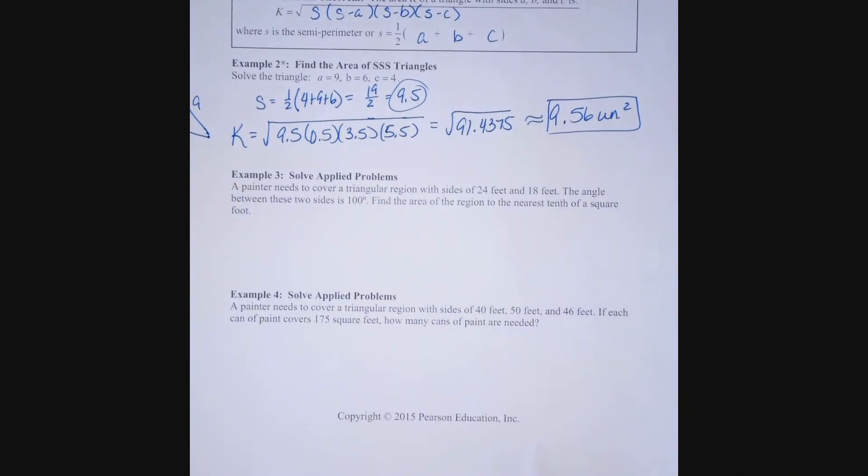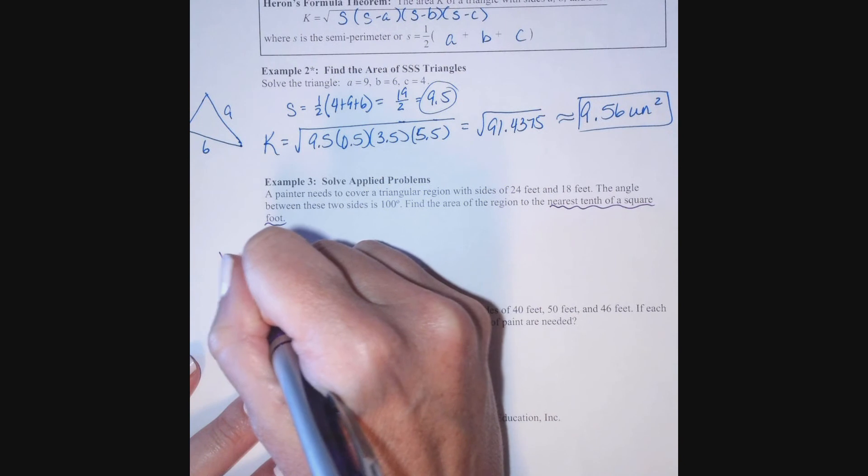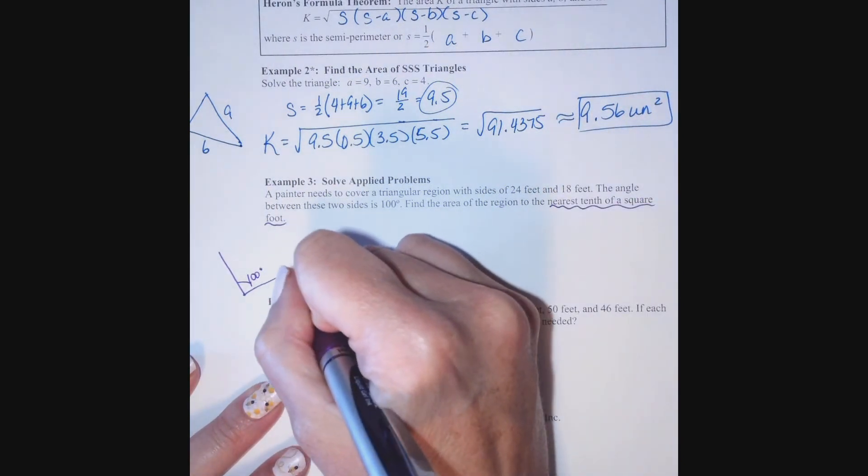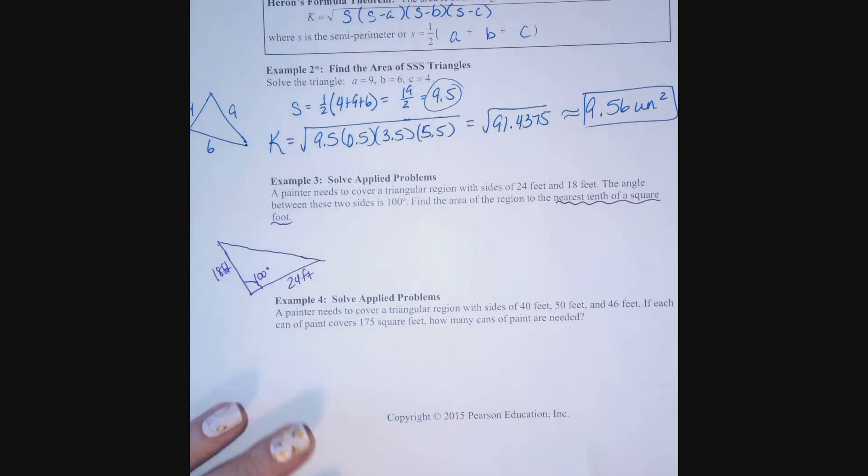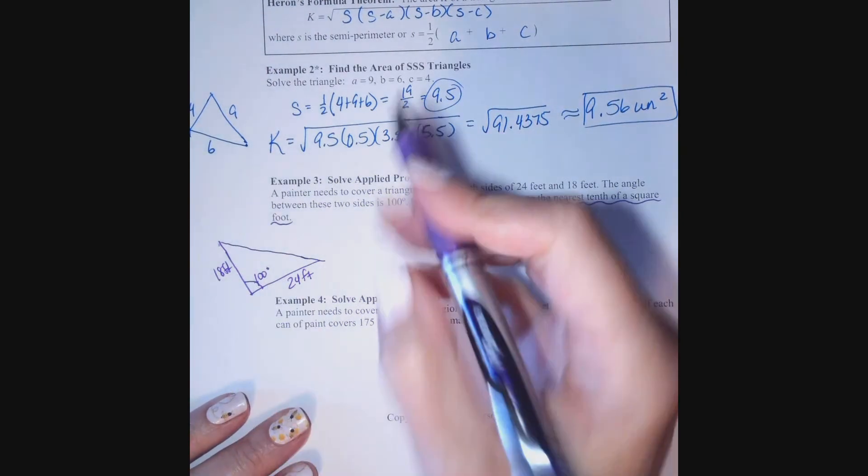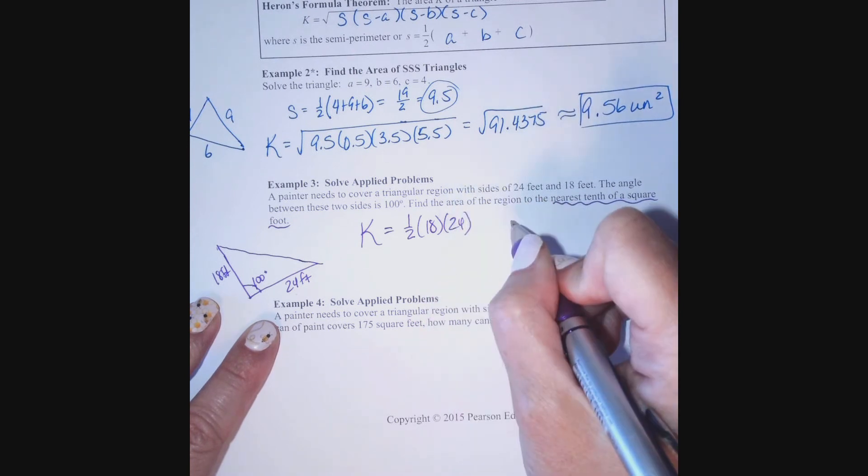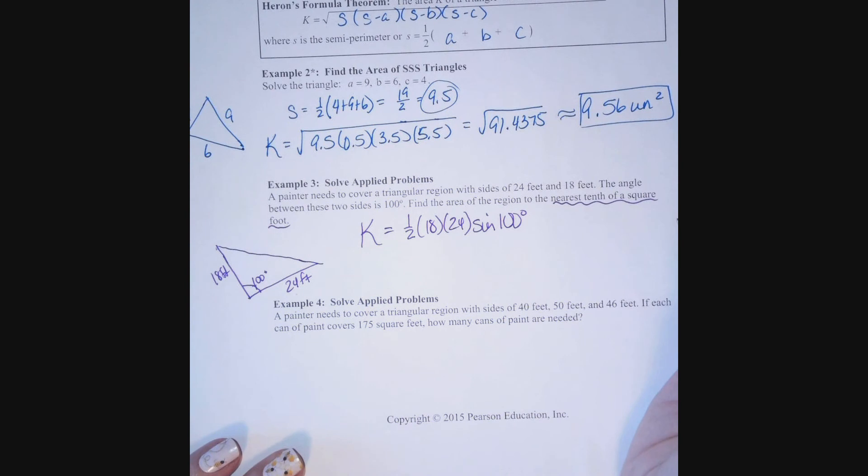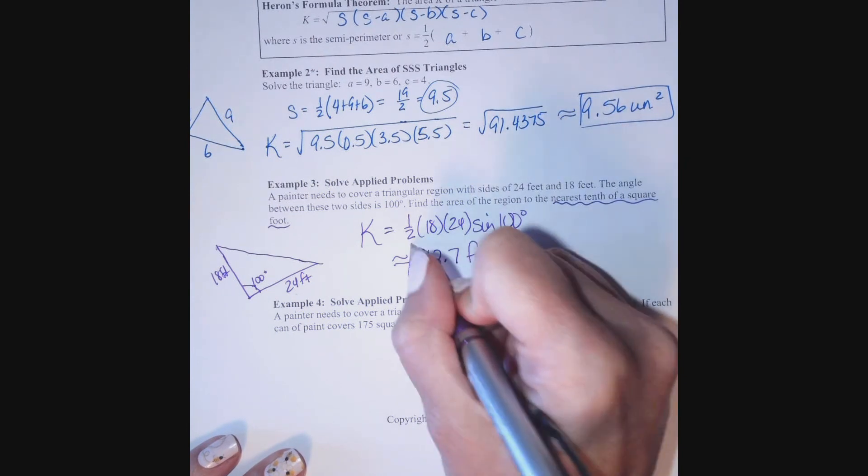All right, a couple of application problems. A painter needs to cover a triangular region with the sides of 24 feet and 18 feet. The angle between the two sides is 100 degrees. Find the area of the region to the nearest tenth of a square foot. We are measuring in square feet. We have this angle of 100 degrees. One side is 24 feet long. One side is 18 feet long. And we want to paint this whole area, this triangle. I know side, angle, side. So, the formula I'm going to use is one-half the product of the two given sides times the sine of the angle. Plug all that into my calculator. I round it to the nearest tenth of a square foot. Don't forget to give correct units.